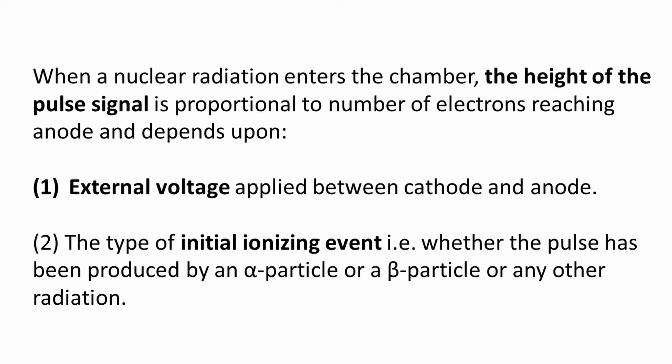The height of the pulse signal is proportional to the number of electrons reaching the anode — that is, how many electrons are reaching the anode.